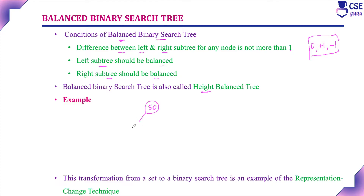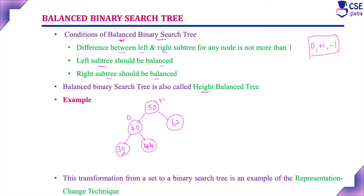For example, the root node is 50, with 40 and 62 as children. The left subtree of 40 is 30 and the right subtree is 44. The balance factor is the height of the left subtree minus the height of the right subtree. Here, height of the left subtree is 2, height of the right subtree is 1, so 2 minus 1 gives plus 1. For node 40, it is 1 minus 1 equals 0. For leaf nodes, it is 0. Since balance factors are 0 or plus 1 throughout, this binary search tree is a balanced one.